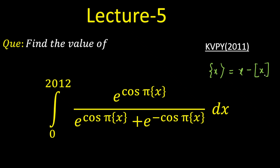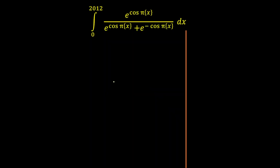The fractional part of x is given by x minus the greatest integer function of x. In the denominator, we have e raised to power cos of pi times fractional part of x, plus e raised to power negative cos of pi times fractional part of x. Now feel free to pause the video before I start the solution. Let's say the value of the integral is I equal to this integral.